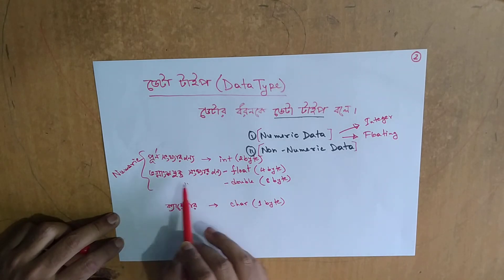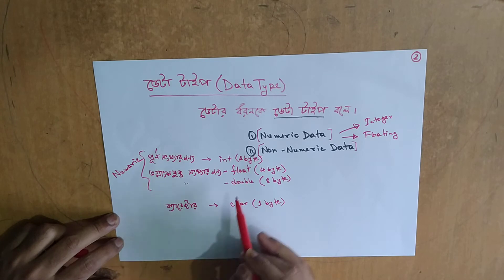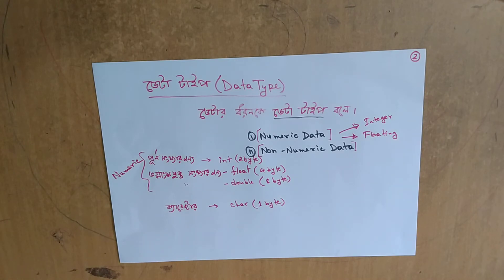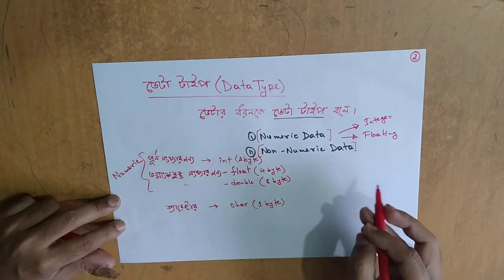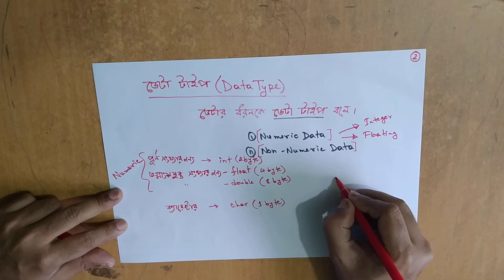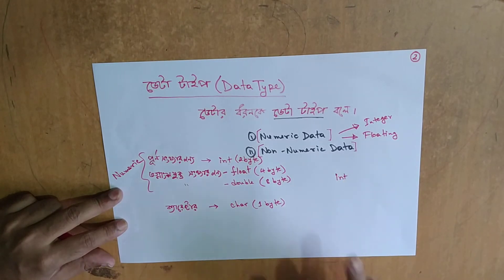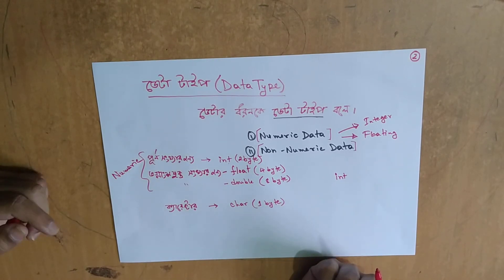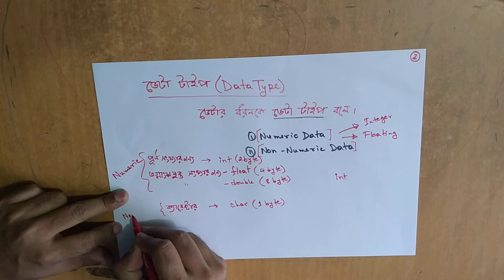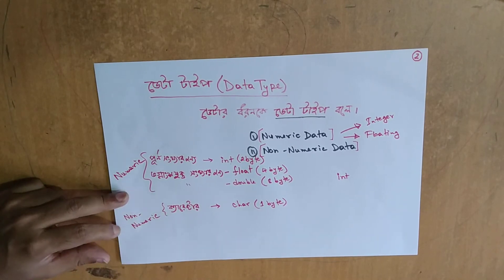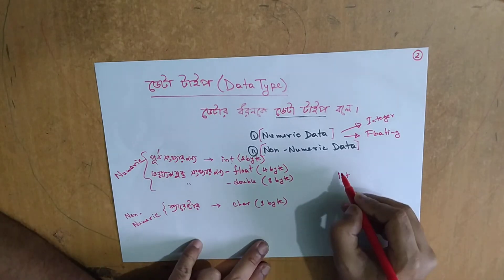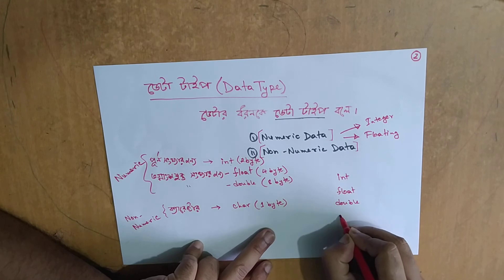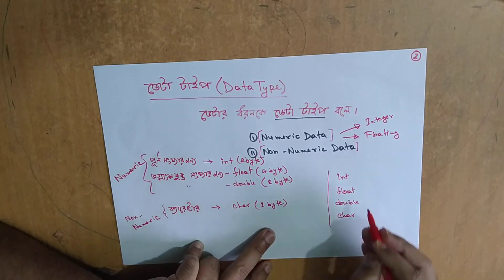Integer is a data type, float is a data type. For example, if we have our data type, we will give some information to the result on the data type. The built-in data types are: int, float, double, and char. This is the built-in data type.